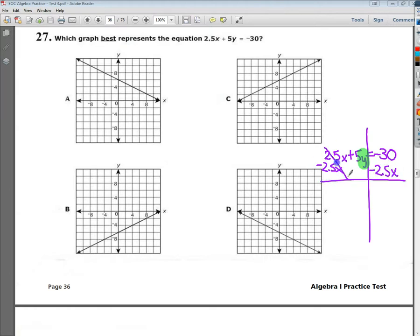This goes away. I bring down 5y here. These two numbers are not like terms, so I can't combine them. Minus 30. Then I need to get rid of times 5, and I have to do it to all the terms. So I end up with negative 6 and negative 2.5 divided by 5, which is negative 1 half.